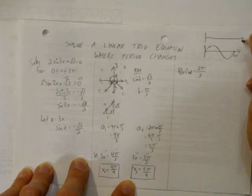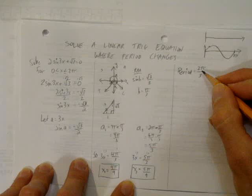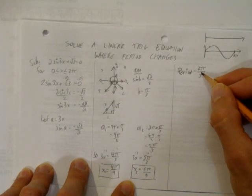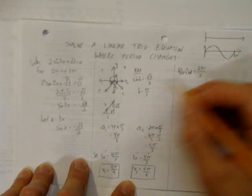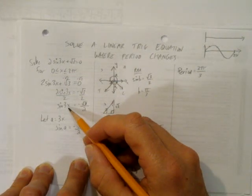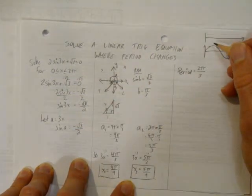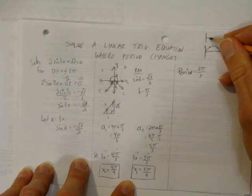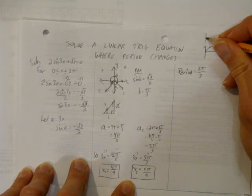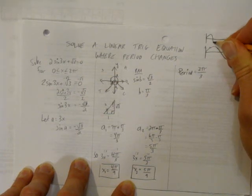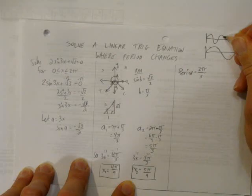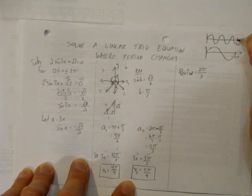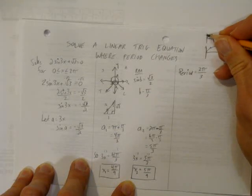But when you change the period, what this means here is now we're going to do a full wave in 2 pi over 3. Or another way to think about it, we're going to compress this wave horizontally by 3. We're going to get three times as many answers. Here's 2 pi again, but our period now is a third as big. So we're going to make one wave and come back, and make a second wave and come back, and make a third wave and come back.